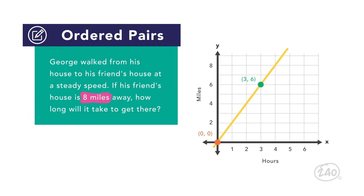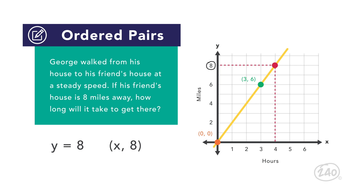Suppose we are told that George's friend's house is eight miles away. How many hours would it take George to walk there? We are given a number of miles, which is a y-value. To determine the number of hours that corresponds to eight miles, we need to find the x-value of the ordered pair on the line with a y-value of eight. Go to eight on the y-axis, then move horizontally across the graph until you reach the line. Now move vertically down to the x-axis. It intersects at x equals four, giving us the ordered pair (4,8). So it takes George four hours to go eight miles.